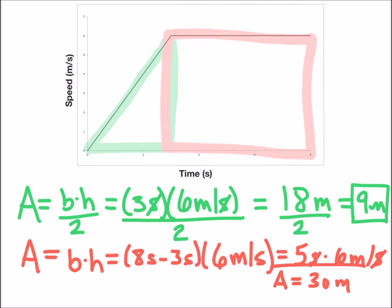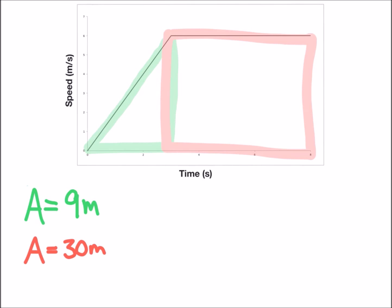Now, in order to find the total area under your graph, what you're going to look at is adding the two sections or the two shapes together. So the total area will equal nine meters plus 30 meters, or the total area will equal 39 meters.